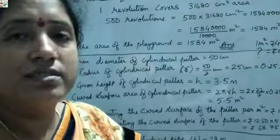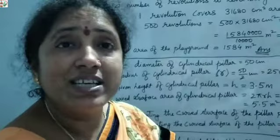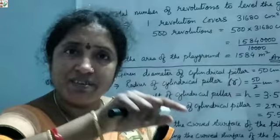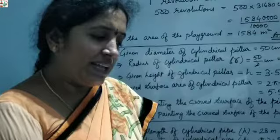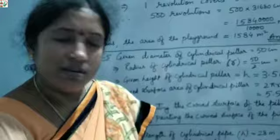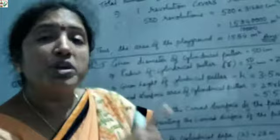Now the 8th question: in a hot water heating system there is a cylindrical pipe — like the pipe in a geyser for water supply. The pipe has a length of 28 m and a diameter of 5 cm, so radius = 5 ÷ 2 cm.